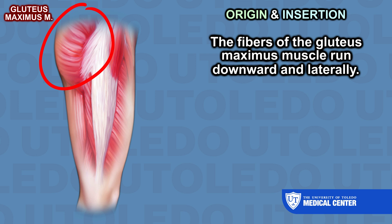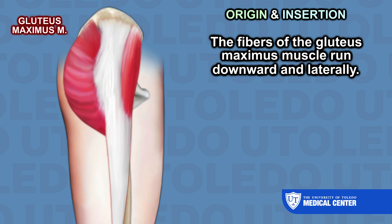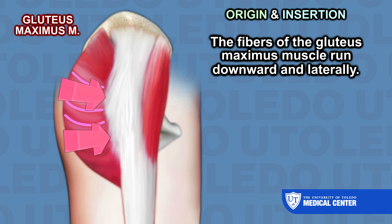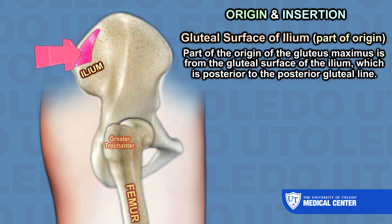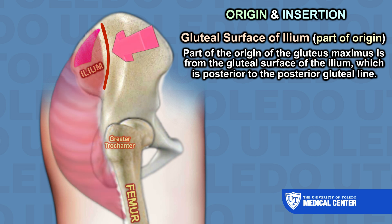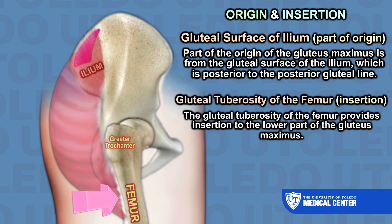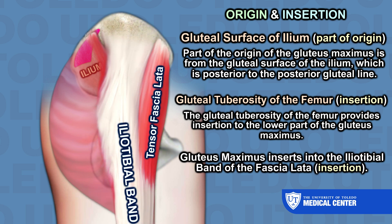The fibers of the gluteus maximus muscle run downward and laterally. The gluteal lines are three bony ridges on the gluteal surface of the ilium, or part of the pelvic bone, that serve as attachment points for the gluteal muscles. Part of the origin of the gluteus maximus is from the gluteal surface of the ilium, posterior to the posterior gluteal line. The gluteal tuberosity of the femur provides insertion to the lower part of the gluteus maximus, which also inserts into the iliotibial band of the fascia latae.